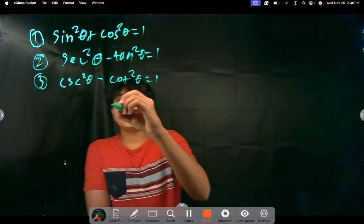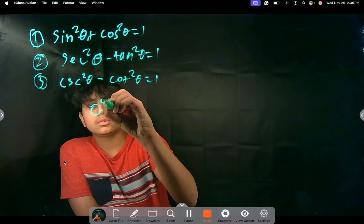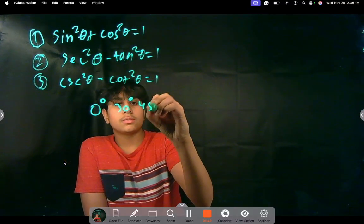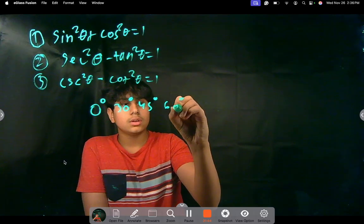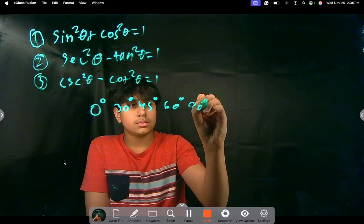So let me first write down the degrees: 0 degrees, 30 degrees, 45 degrees, 60 degrees, and 90 degrees.